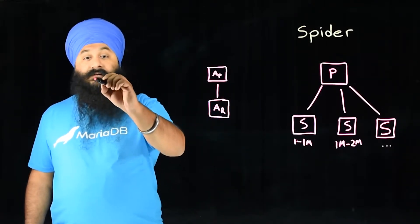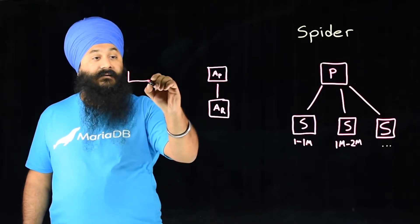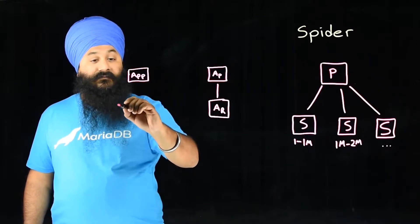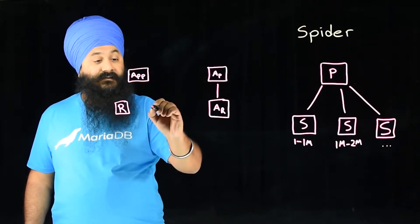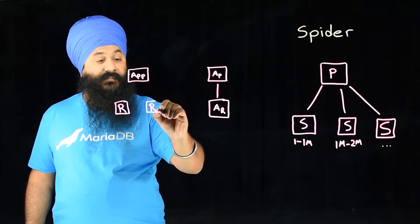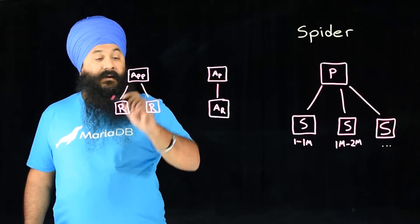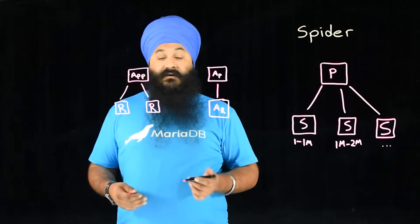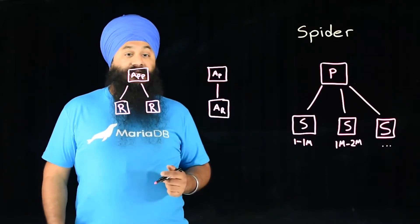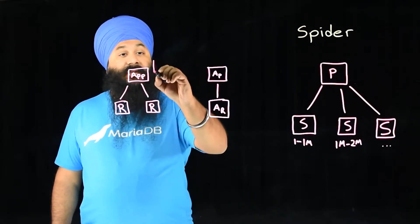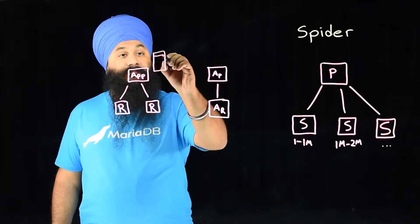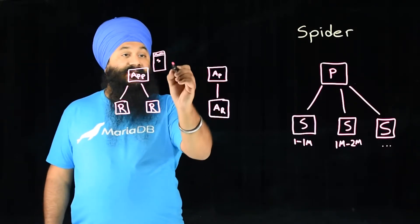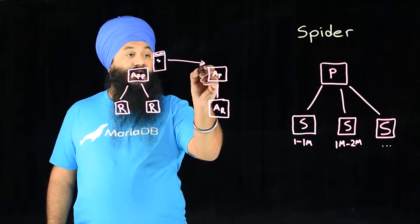That new application also had its own primary. So this is the app and it had a few replicas and it did its own work — I believe it was a billing app. But what they needed to do was access this auth service, and they didn't really want to deploy new services or new applications to do that. So what they did was they created that Spyder auth table, and it was Spyder.